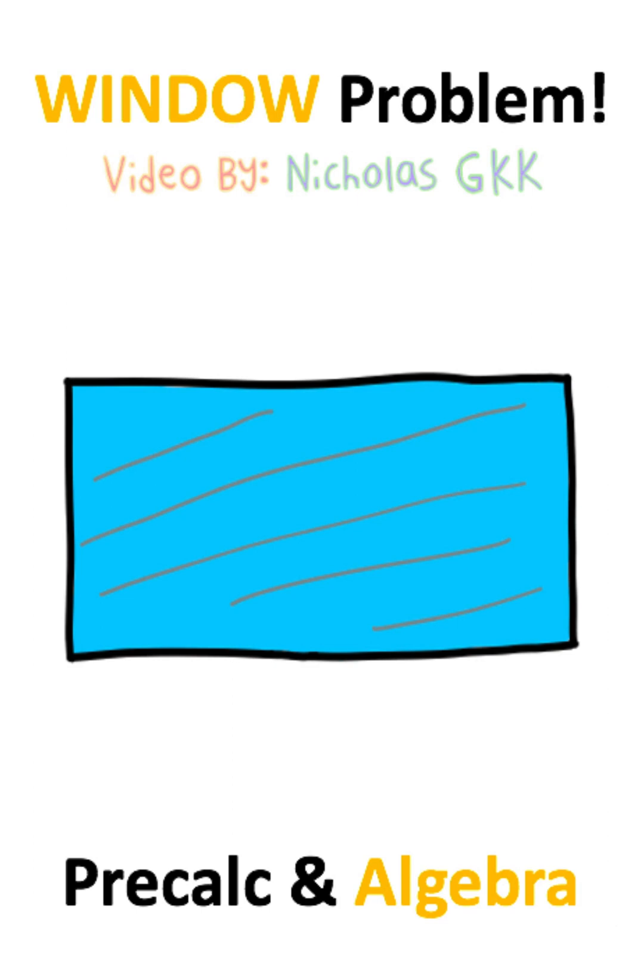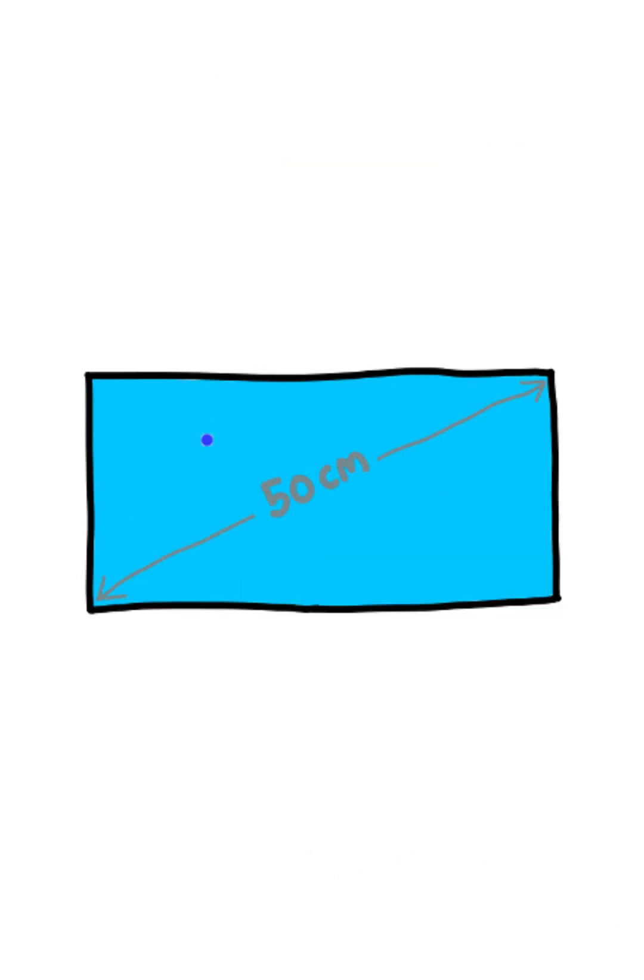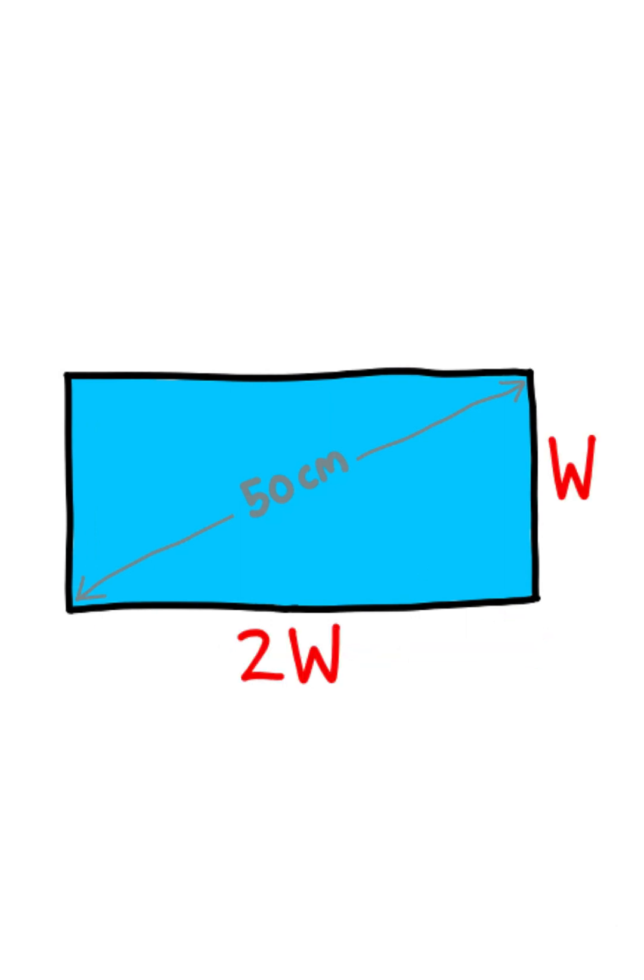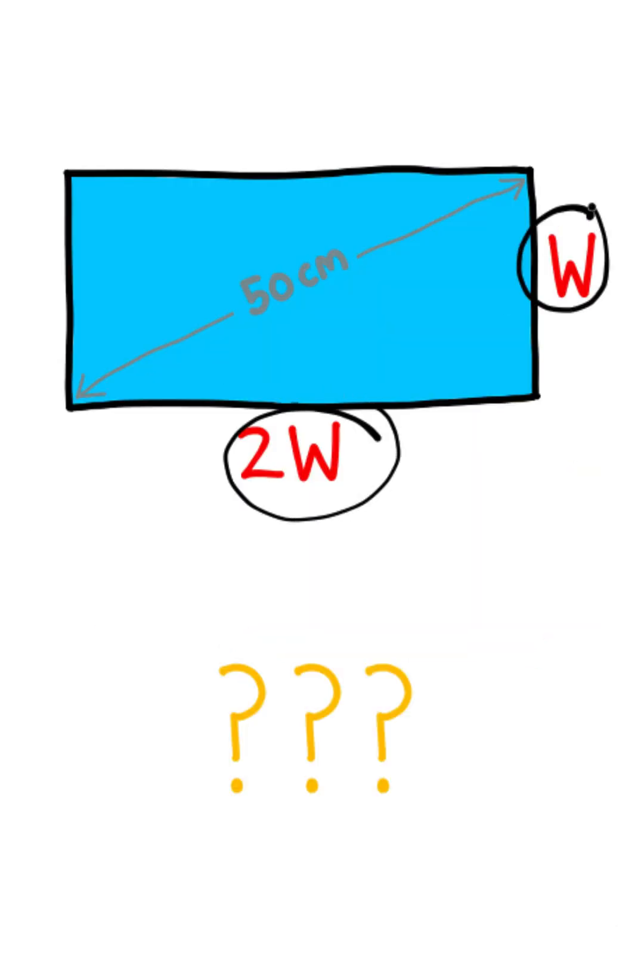In front of you is a rectangular window that measures 50 centimeters across the diagonal. If the length of this window is twice the width, how can we calculate these two sides of the window?